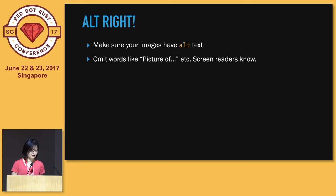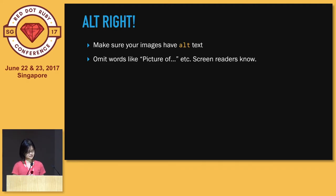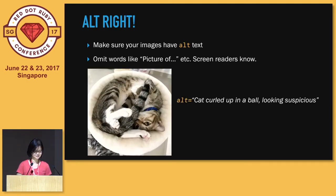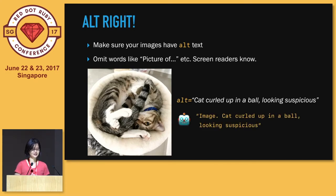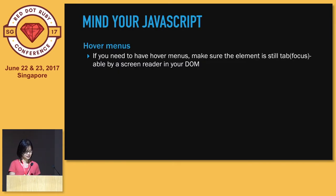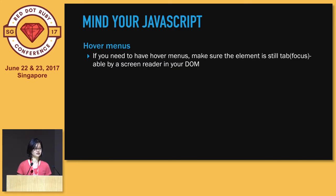Also make sure you put alt descriptions for your images, and you can omit words like 'image of' or 'picture of' because the screen reader already knows and will tell the user. For example, if you have an alt text that says 'cat curled up in a ball looking suspicious,' the screen reader will say 'image, cat curled up in a ball looking suspicious.' And if you want to do things like hover menus or anything that requires the user to visually see something in order to interact with it, make sure that the underlying HTML elements and structure of that menu is still accessible via the DOM so that the screen reader can actually focus into it.